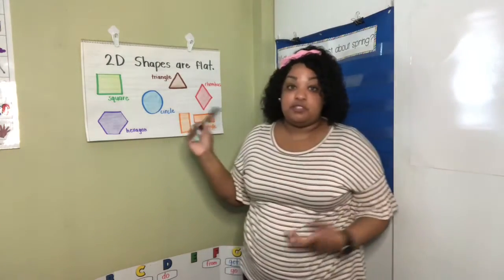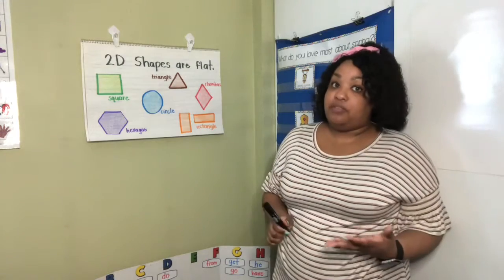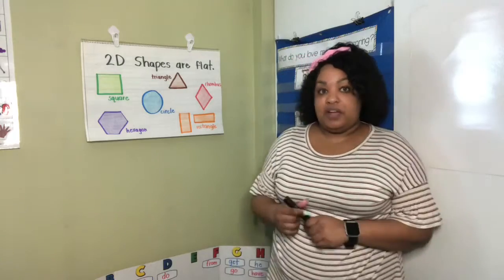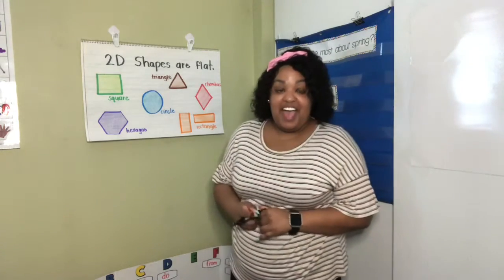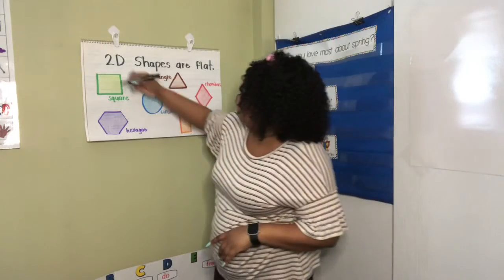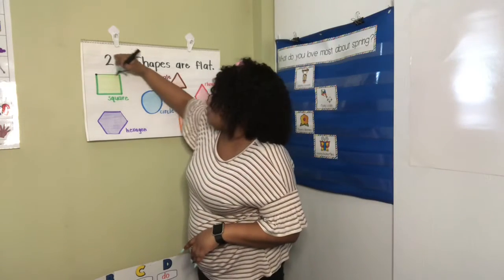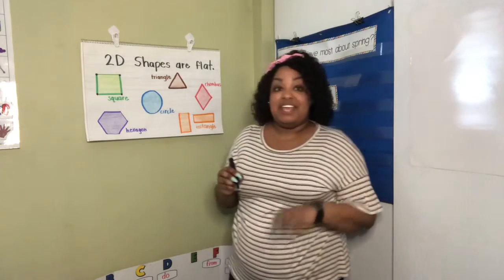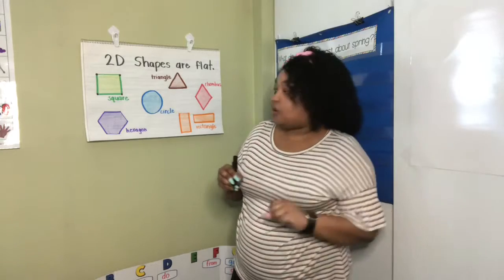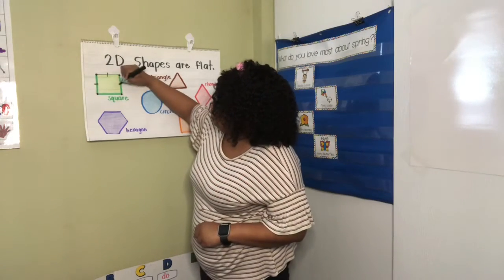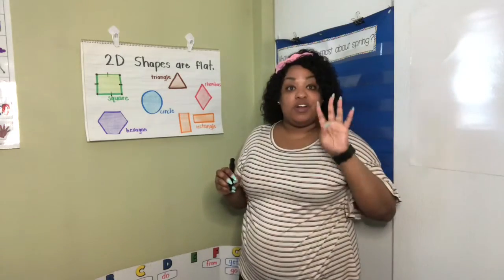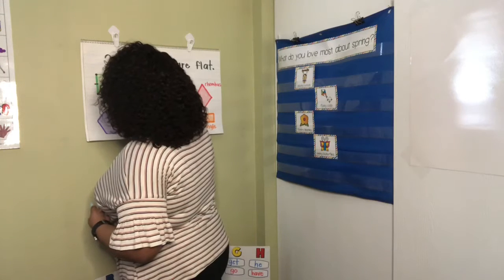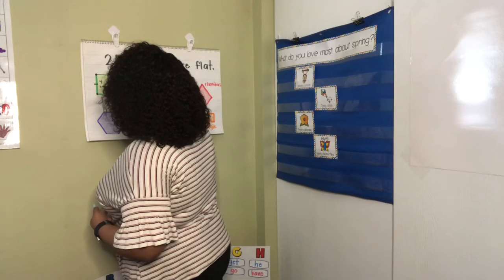Now, each of these shapes are special. There's something about them that we've learned. Let's go back and talk about a square. A square has four vertices. Remember, vertices are where the lines touch. One, two, three, four. A square also has one, two, three, four sides. So, a square has four vertices and four sides.